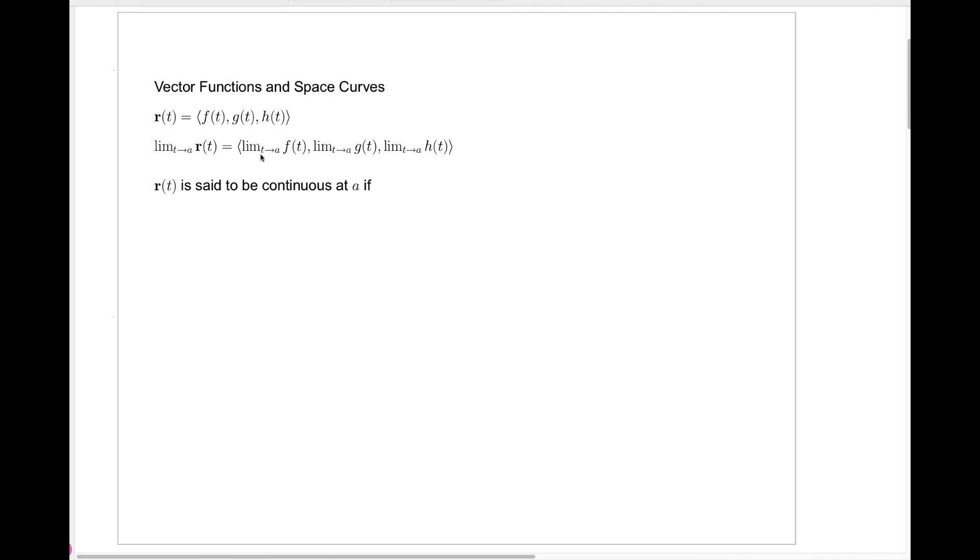So the first component is the limit as t approaches a of f of t, the second component, the limit as t approaches a of g of t, and the third, the limit as t approaches a of h of t. And then we extend our standard definition of what it means for a function to be continuous to say that r of t is continuous at a if the limit as t approaches a of r of t is exactly r of a.